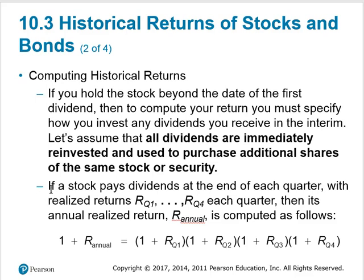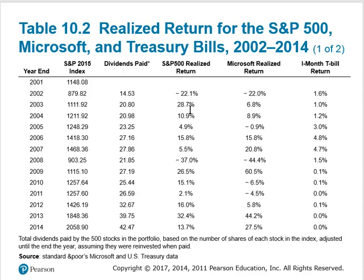We can do the exact same things with historical returns. If we have a series of prices, we can calculate the rate of return per period. Of course, if there are cash flows paid in the meantime — dividends — we do have to take those into account in our overall returns. Here we have a graph that represents the S&P 500 from 2015, showing the index value.